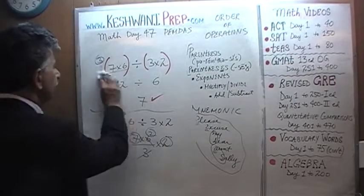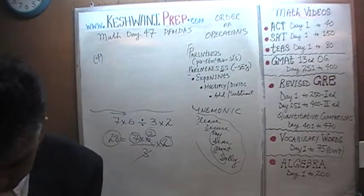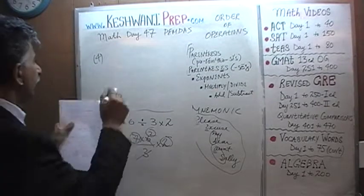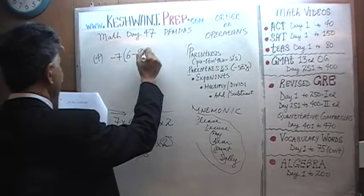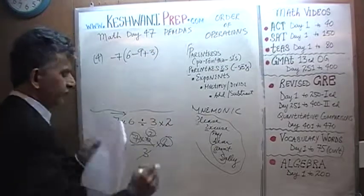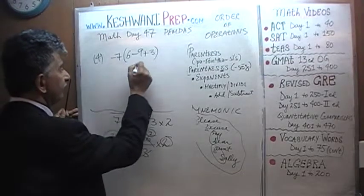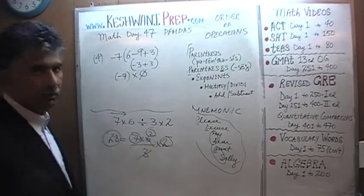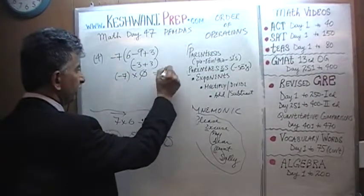Number 4: Negative 7 times (6 minus 9 plus 3). First do the parentheses: 6 minus 9 is negative 3, and negative 3 plus 3 is 0. Then 0 times negative 7 — it doesn't matter what's in front, because 0 times anything is just 0.